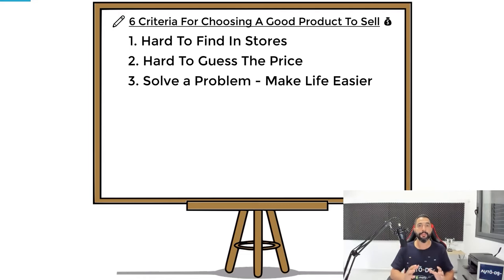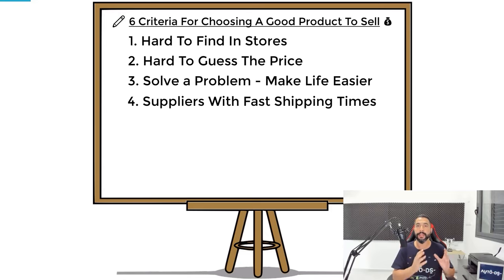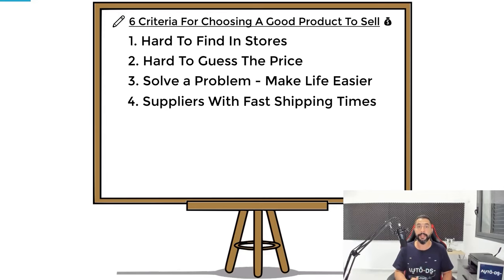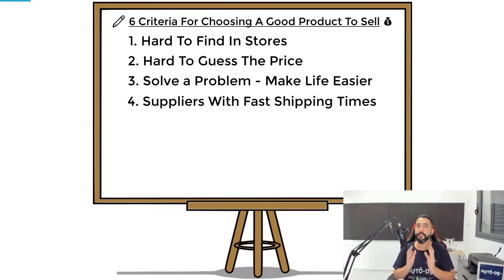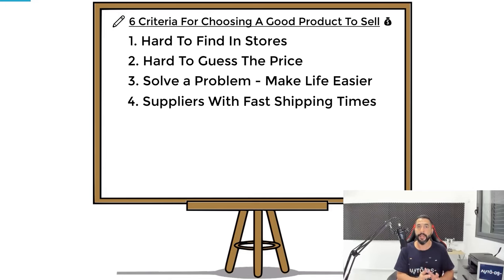The fourth criteria is that your dropshipping suppliers need to have fast shipping and delivery times. Customers do not want to wait more than one week to get their orders. That is why I don't recommend working with Chinese suppliers — many people do it and it's fine, it is not a wrong method — but if you want a higher quality store, higher quality products, and satisfied customers, you need to work with American suppliers with fast shipping times. Keep this in mind: you need suppliers with super fast shipping times, super fast delivery times, and good customer support when it comes to returns.